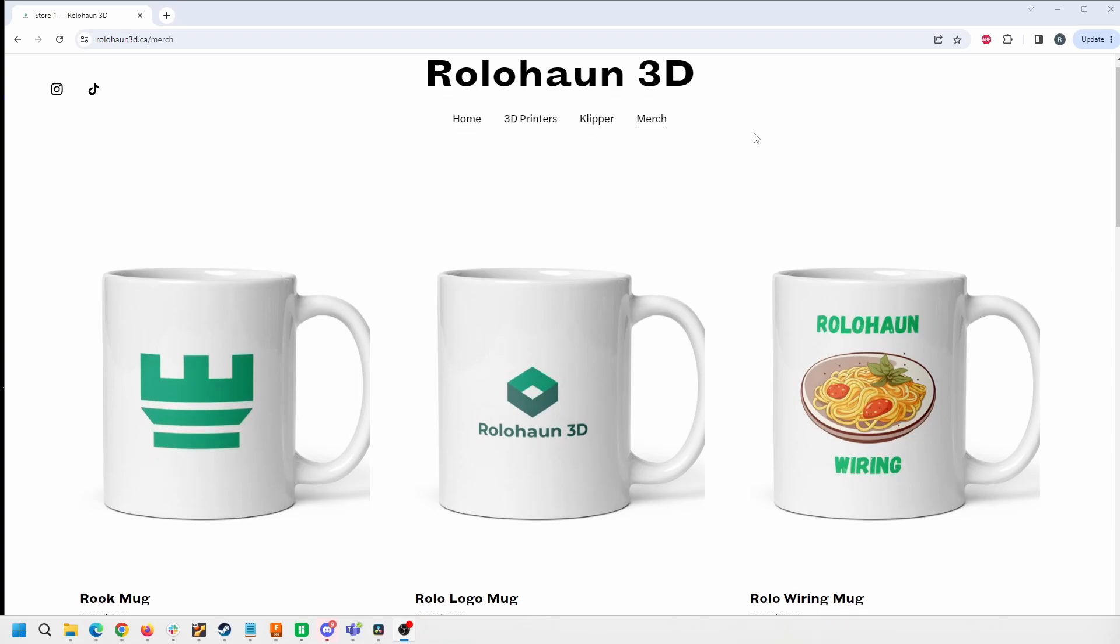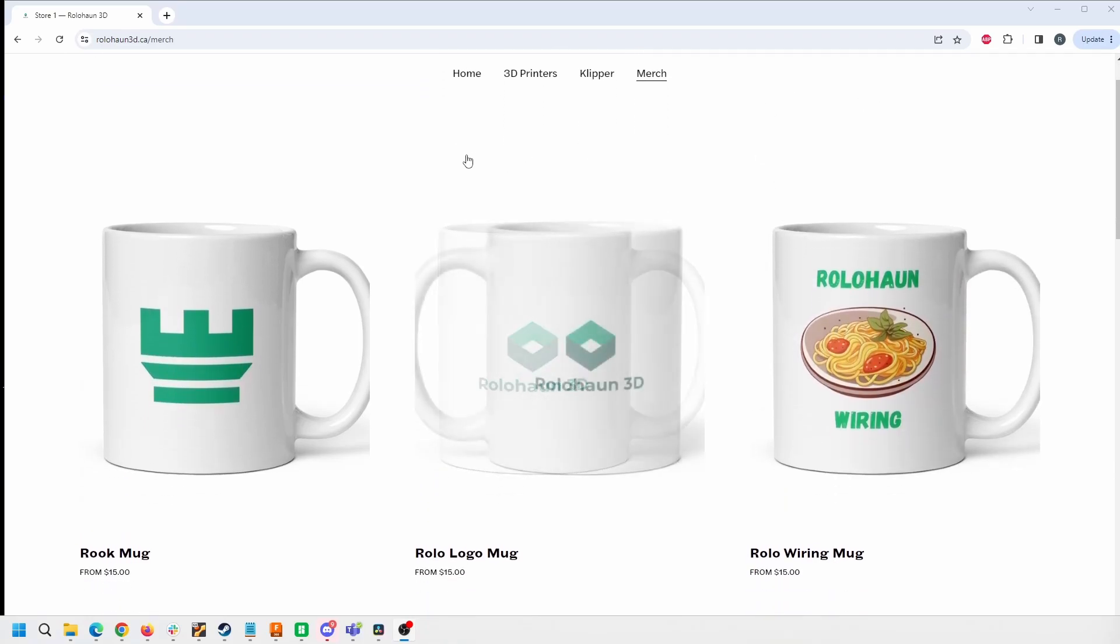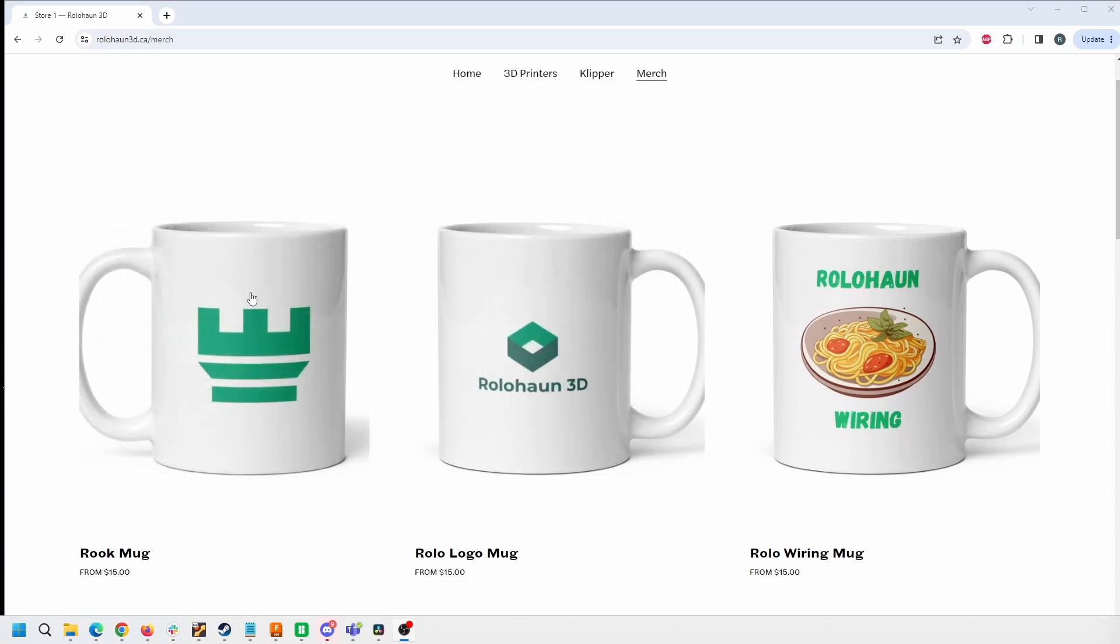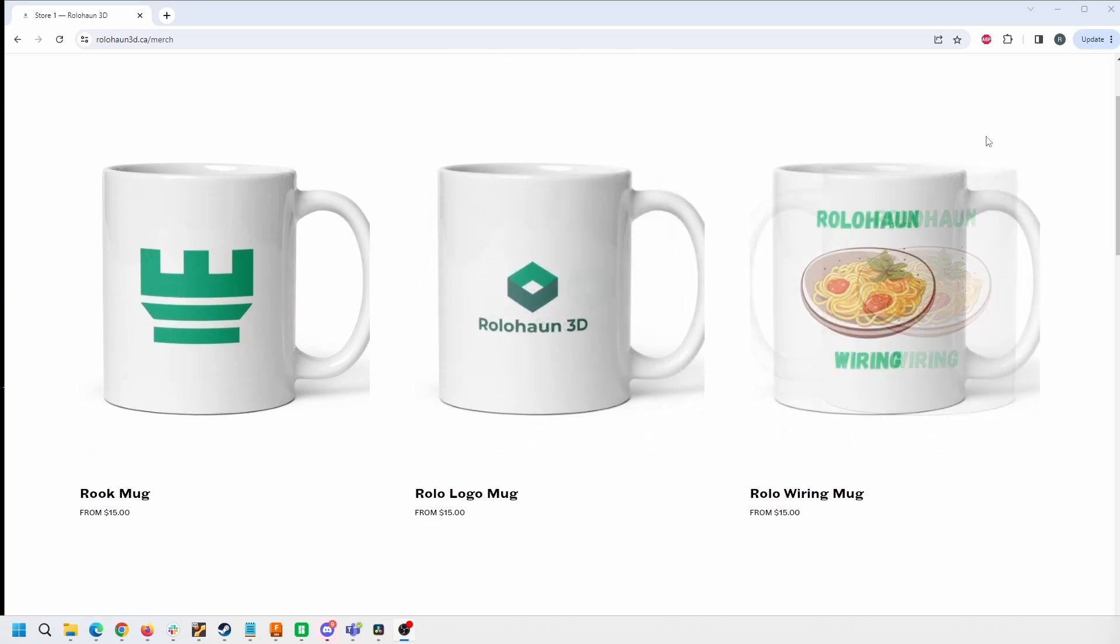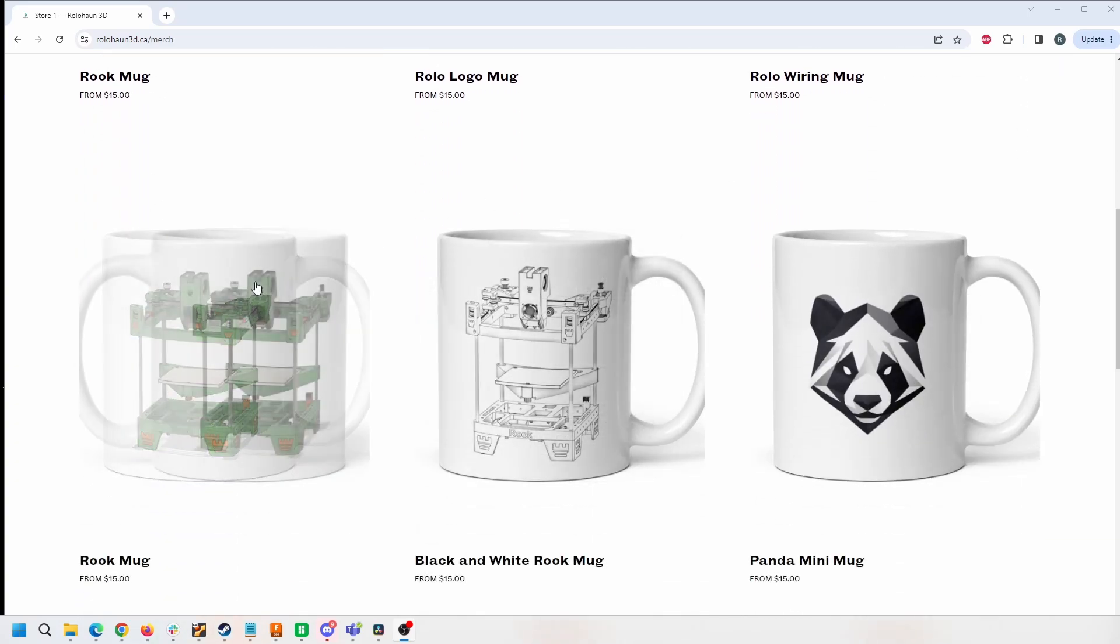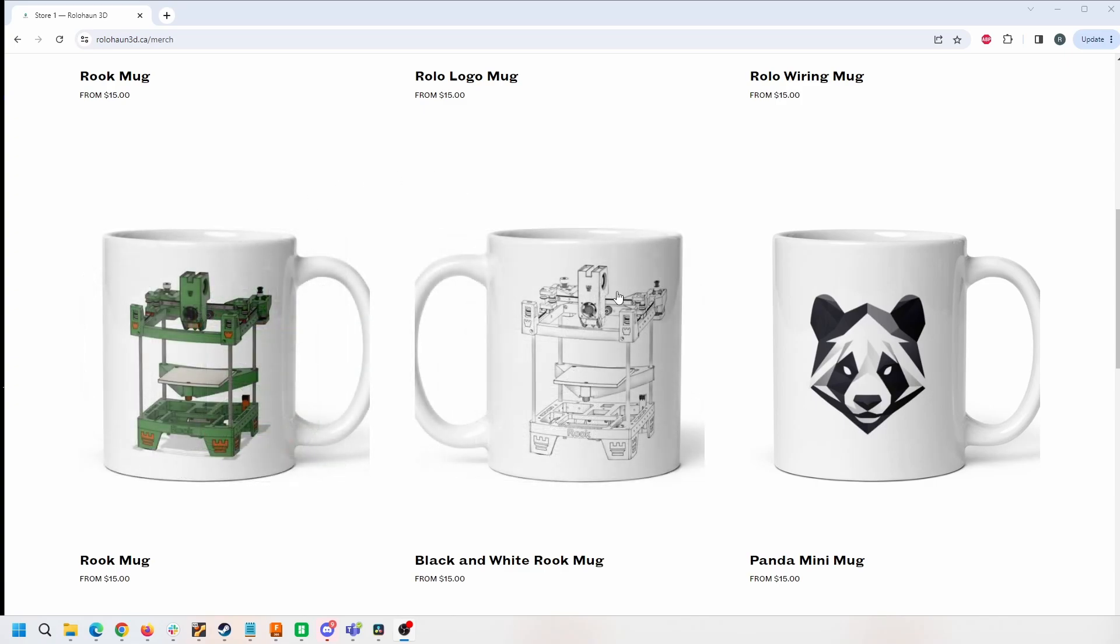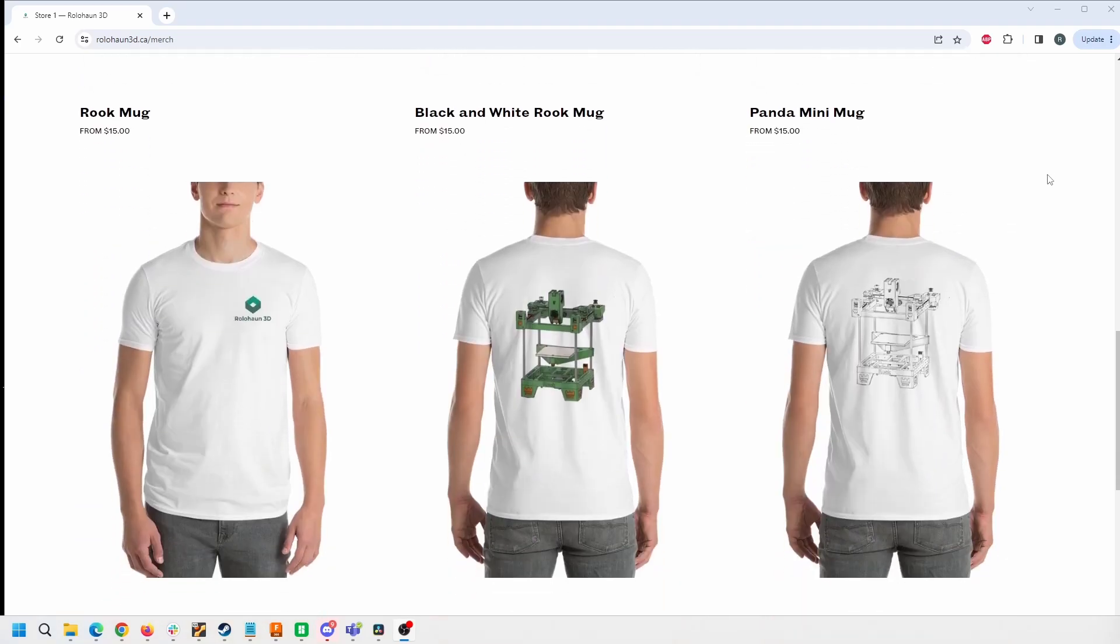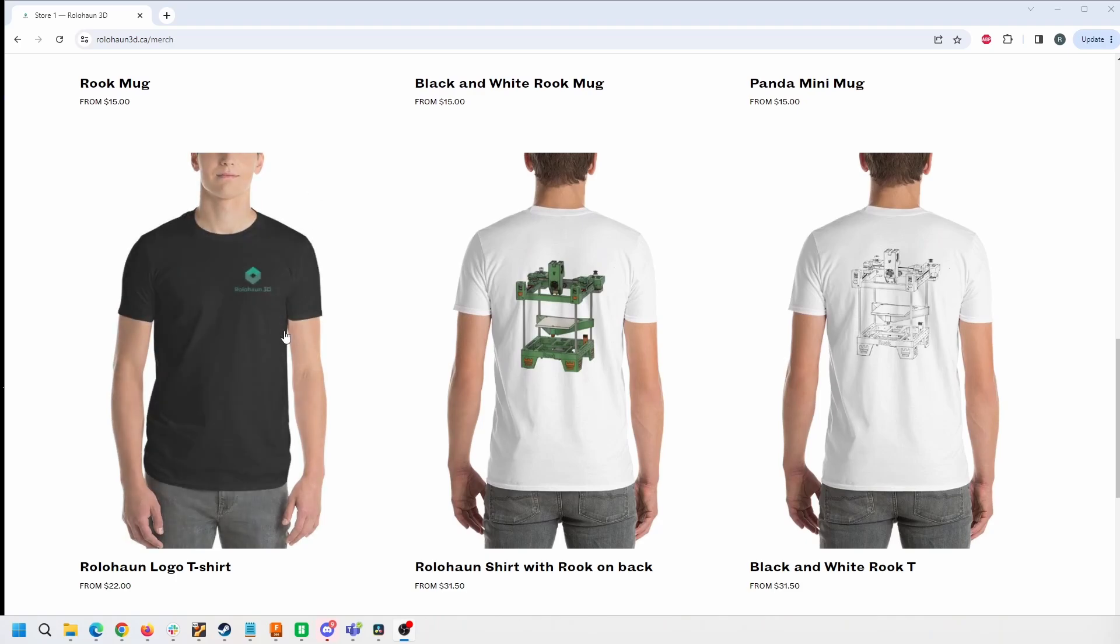I have some pretty cool stuff here. We have some mugs - one with the Rook logo, one with the Rolohan 3D logo. I have my meme from Discord and my videos, my Rolohan spaghetti wiring because my wiring is always exceptional. We have some Rook MK1 mugs, a blueprint black and white style Rook mug, we have a panda mug...